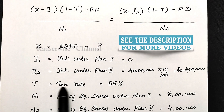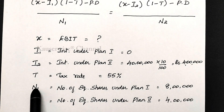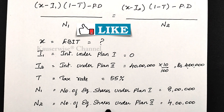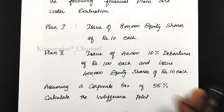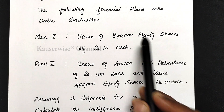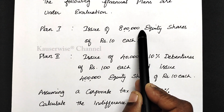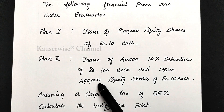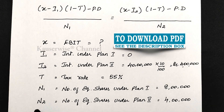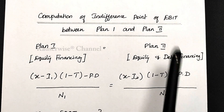T refers to tax rate — in our problem, the tax rate is 55 percent. N1 and N2 refer to number of equity shares under plan 1 and plan 2 respectively. Under plan 1, we have 8 lakhs equity shares of rupees 10 each, so N1 = 8 lakhs. Under plan 2, we have 4 lakhs equity shares of rupees 10 each, so N2 = 4 lakhs. With these values, we are going to apply the equation and find out EBIT.